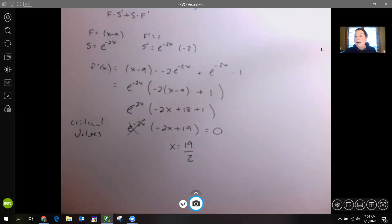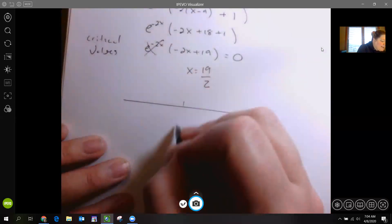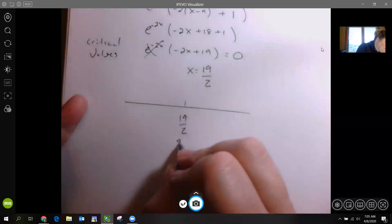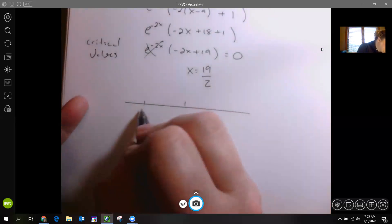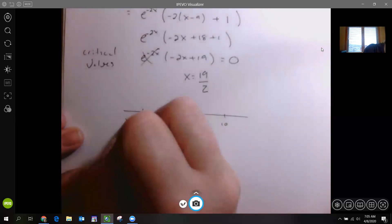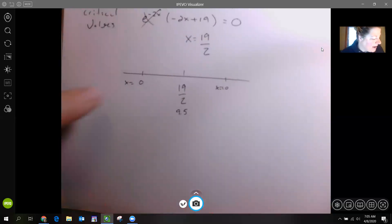We have to check below and above to see where it's positive and where it's negative for increasing and decreasing. We have one critical value at 19/2. 19/2 is about 9.5. If I wanted to use something below, I'm going to use 0. And if I use something above, I'm going to use 10.